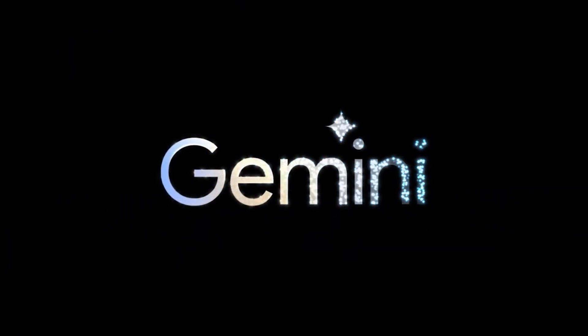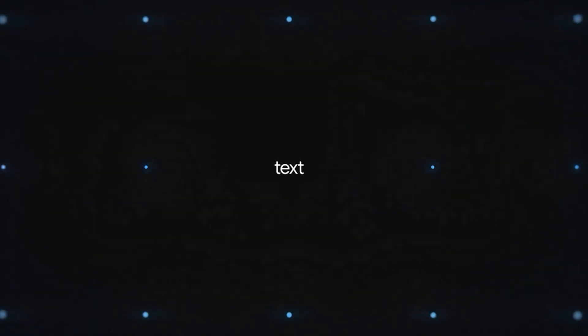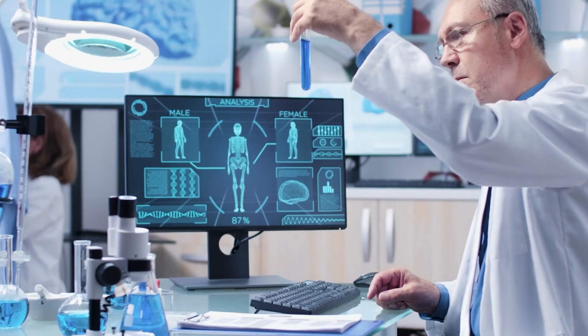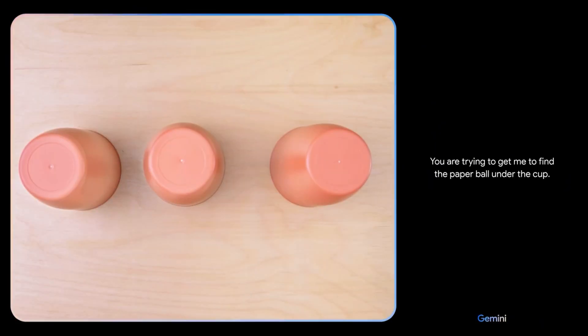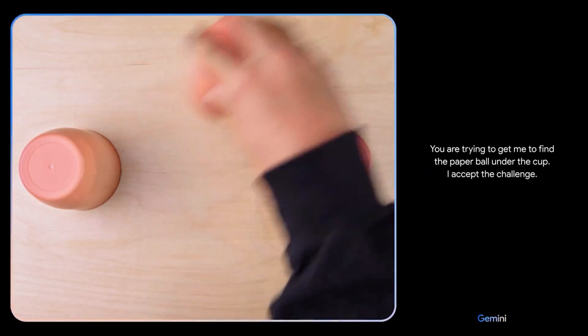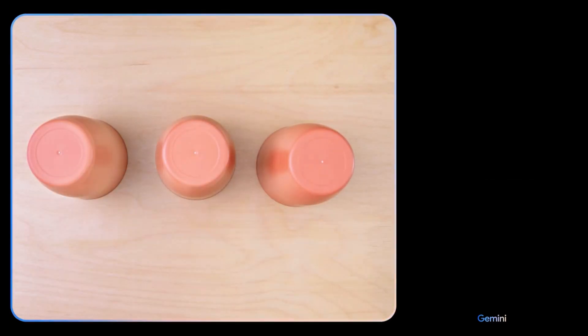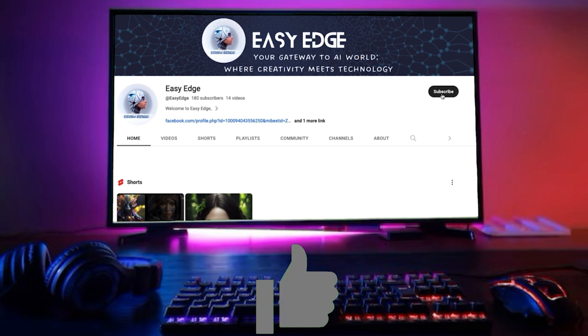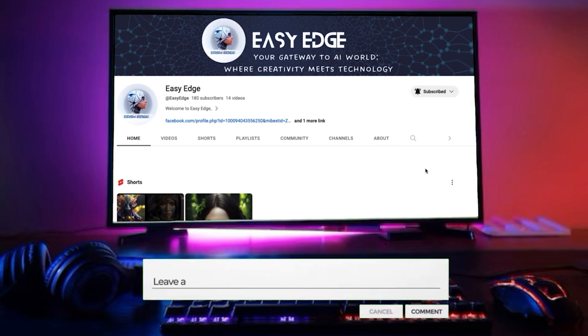Google recently announced its most powerful AI model yet, beating GPT-4 in almost every task. But that's not the end. It even beats human experts. However, some of the things Google showed us in the Gemini demo are not entirely true. So before we dive further into the video, make sure to show some love by clicking the like button and subscribe to the channel for more AI content.